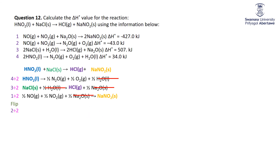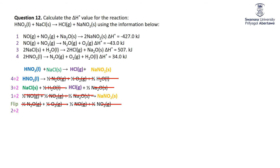Taking equation 2, flipping and halving it gives: ½N₂O + ½O₂ on the left, and ½NO + ½NO₂ on the right. Now everything cancels: ½NO₂ right cancels with ½NO₂ left; ½O₂ right cancels with ½O₂ left; and the N₂O and NO₂ terms cancel across left and right. After all that cancellation — lots of red ink — the overall target equation is what remains.